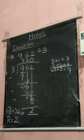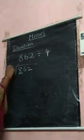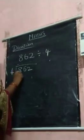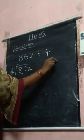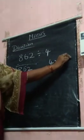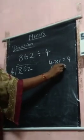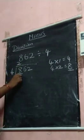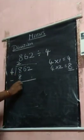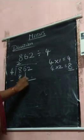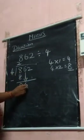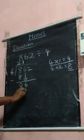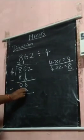862 divided by 4. Take the 4. 8 is bigger than 4, so you start from 1. 4 1's are 4, 4 2's are 8, 8 will come now. 4 2's are 8, 8 minus 8, 0. You bring down this 6. 4 tables, 6 will come now. 4 1's are 4, you subtract, 6 minus 4, 2.